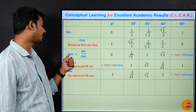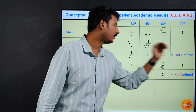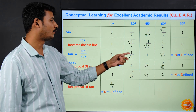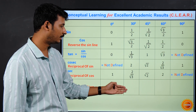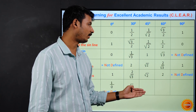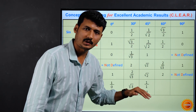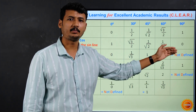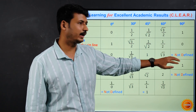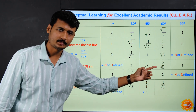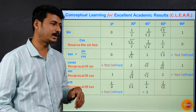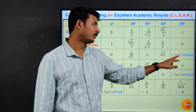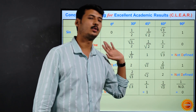The reciprocal of tan gives us cot. So: cot 0° = reciprocal of 0 = 1/0 = not defined; cot 30° = reciprocal of 1/root3 = root3; cot 45° = reciprocal of 1 = 1; cot 60° = reciprocal of root3 = 1/root3; and cot 90° = reciprocal of not defined. When the denominator is 0 it's not defined, and when you take its reciprocal the numerator becomes 0, so 0 upon something is always 0. When you do the reciprocal of not defined, you always get 0.